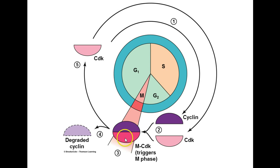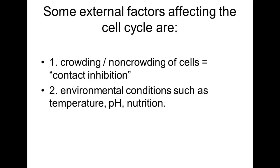Now let's look at some external factors. Cyclin and cyclin-dependent kinase are internal factors controlling the cell cycle. One external factor that's easy to imagine is crowding — the non-crowding of cells. This is called contact inhibition. If cells are pushing against one another, that serves as a signal that there are enough cells and no more cell division is needed right now.